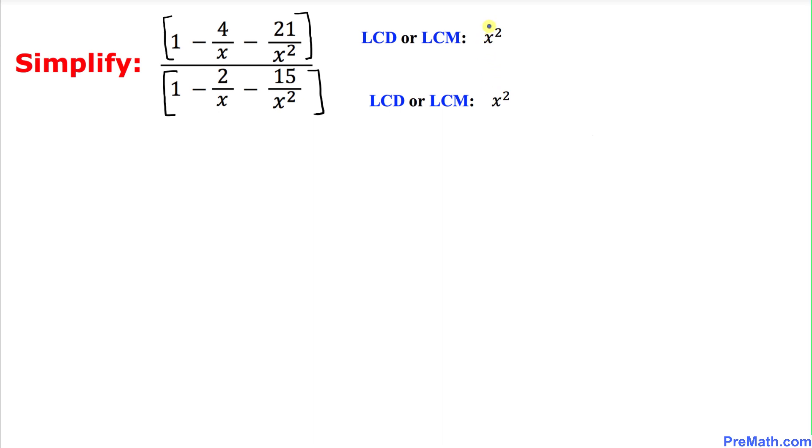And now as we can see that the least common denominator for both parts are the same so I am going to multiply the top part by x square and the bottom by x square as well.